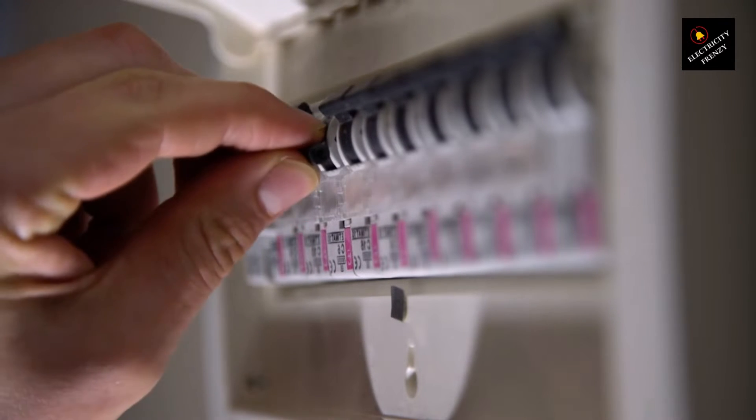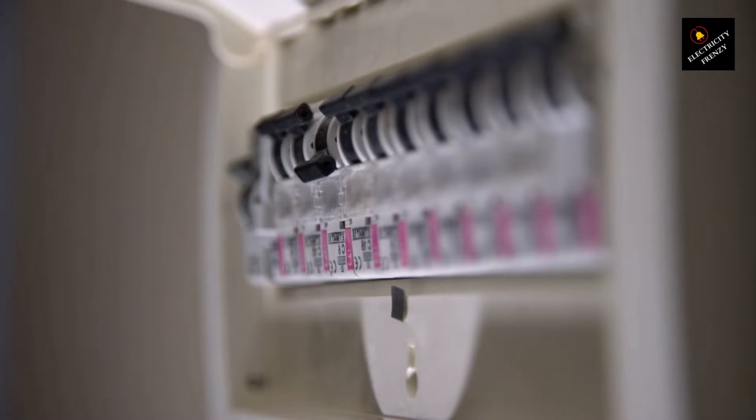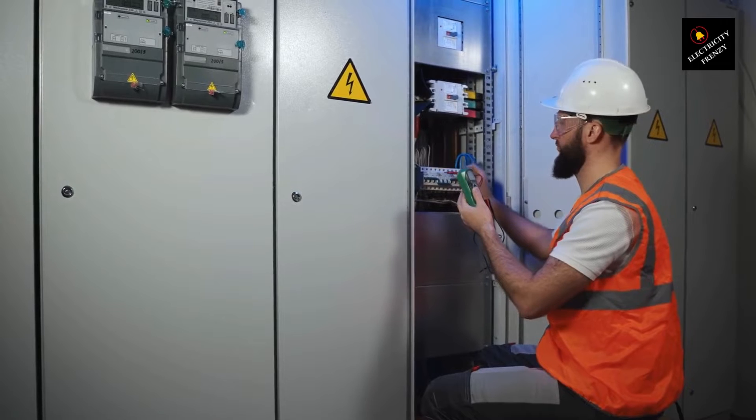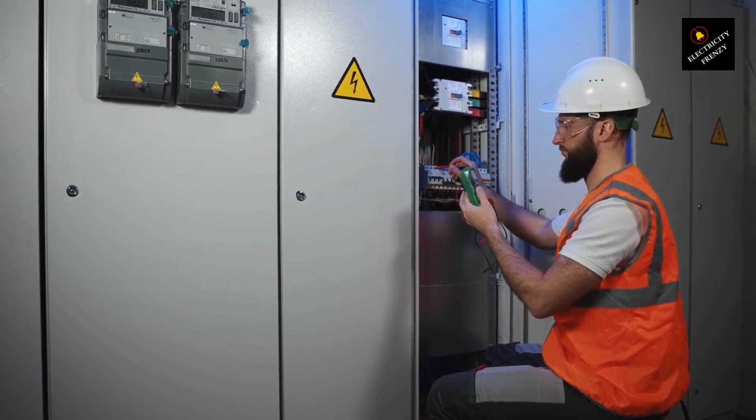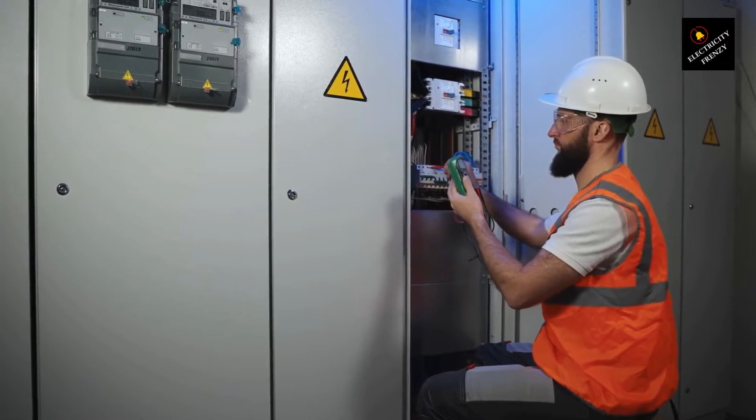While a faulty dryer can indeed cause the circuit breaker to trip, it's not the only possible cause. There are various factors that can lead to a circuit breaker tripping when the dryer is in use. Let's delve deeper into each potential cause of your dryer tripping the circuit breaker.